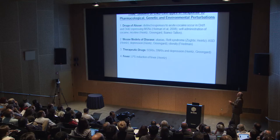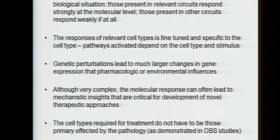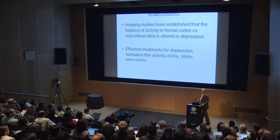What I'd like to show you is an example of the things we've been doing. We've been profiling the responses to drugs of abuse, to therapeutic drugs, to mouse models of disease, and in physiologic disturbances like fever. The general results are that the molecular phenotypes of individual cell types in different circumstances are very distinct. If you cross a mouse model of a disease onto these BAC-TRAP lines and measure what happens, the cells impacted by that mutation change at the molecular level; those that are not impacted don't change. The responses of different cell types to abusive drugs and therapeutic drugs are different. I want to show you why this is important by focusing on depression.